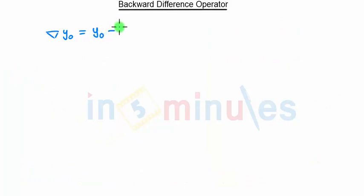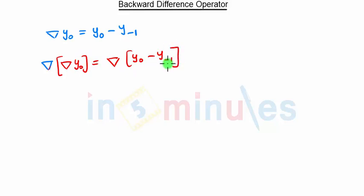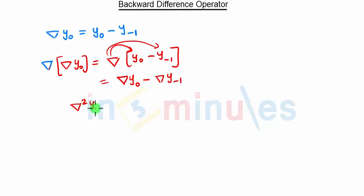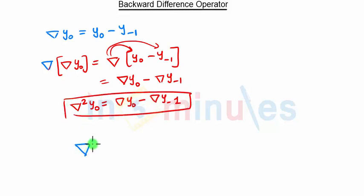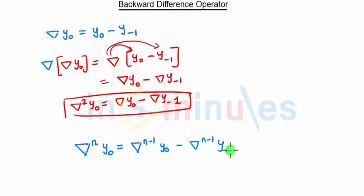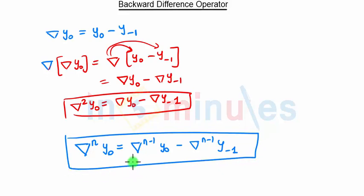We can also take multiple backward differences. Starting from ∇y(0) = y(0) - y(-1), if we apply the inverted delta again, we get ∇²y(0) = ∇y(0) - ∇y(-1). In general, we can write: ∇ⁿy(0) = ∇ⁿ⁻¹y(0) - ∇ⁿ⁻¹y(-1). This is the generalized formula for the backward difference operator.